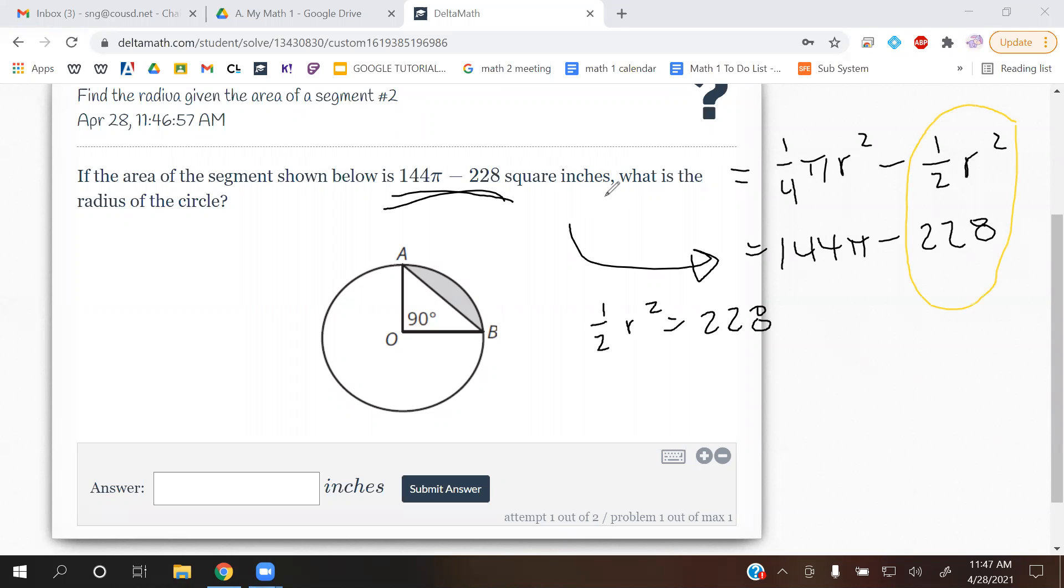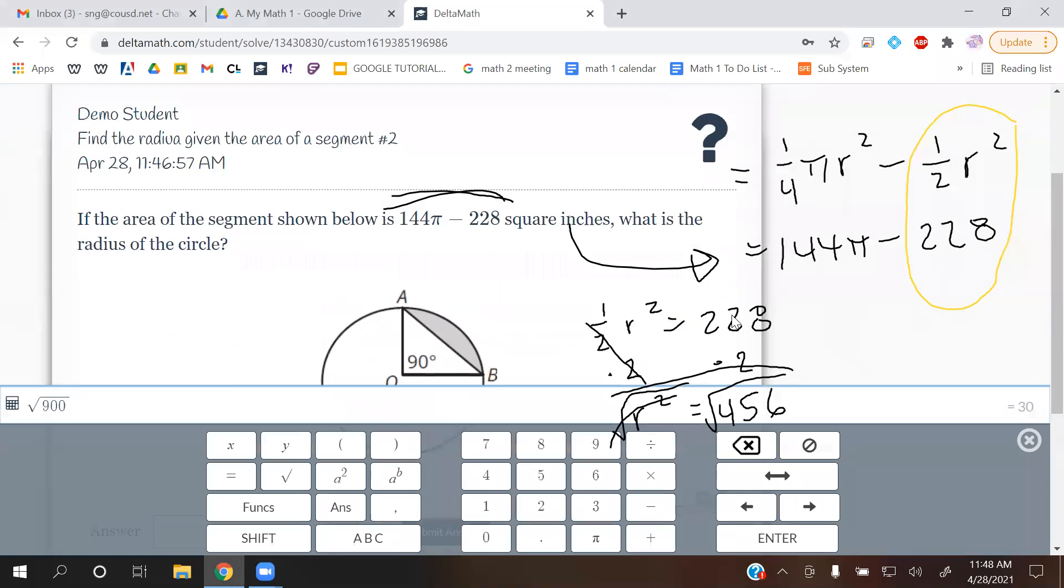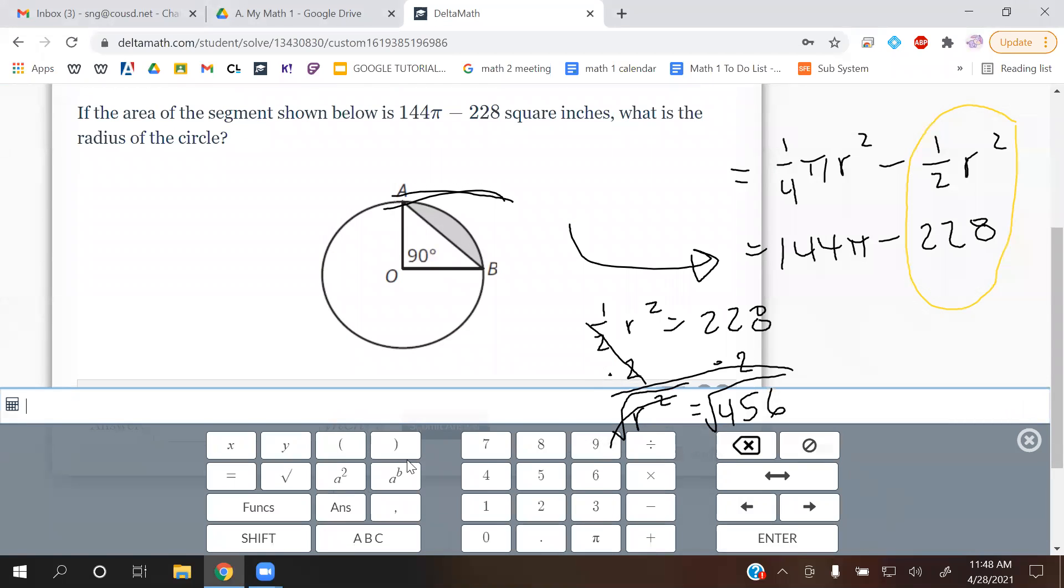Okay, so same steps. You want to get r, the radius by itself. So let's multiply by 2 to get rid of the fraction. Then you get r² is equal to 456. And then you're going to get rid of the squared by square rooting, that cancels with each other. And the square root of 456, if you don't know it,